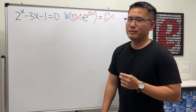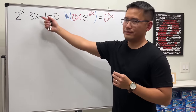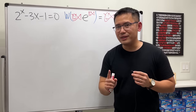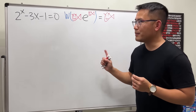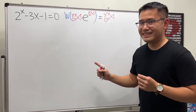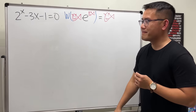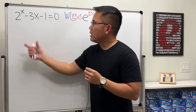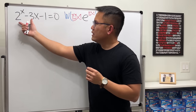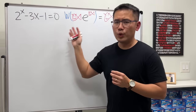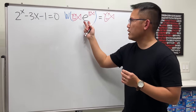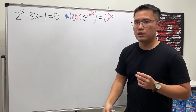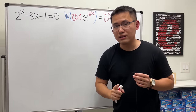How can we make that happen? If you want to try it, go ahead and pause the video now and think about it. Here's the key: instead of subtraction, we want multiplication. Also, the Lambert W function is called the product log.